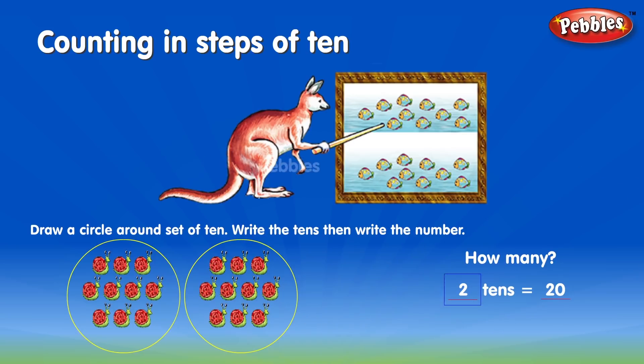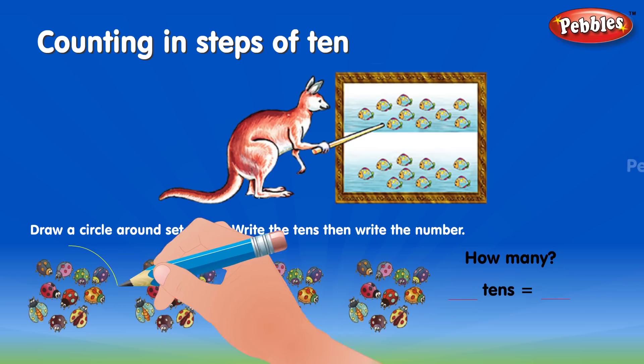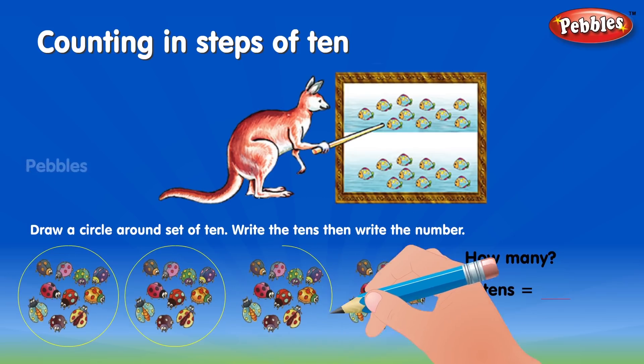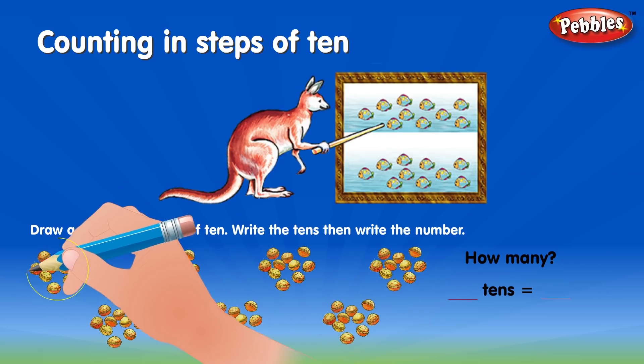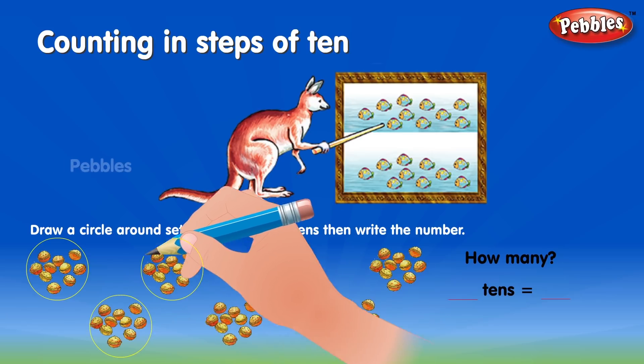2 tens is equal to 20. Blank tens equals blank. 4 tens equals 40. Blank tens equals blank.